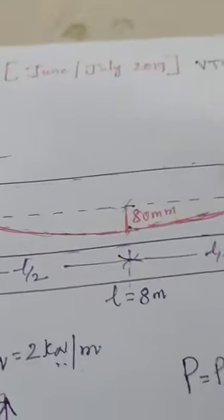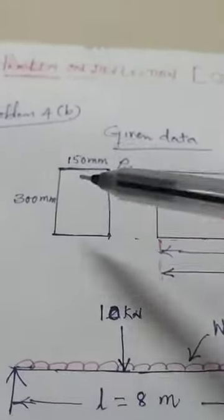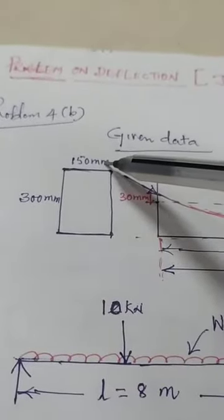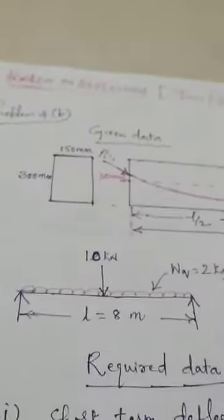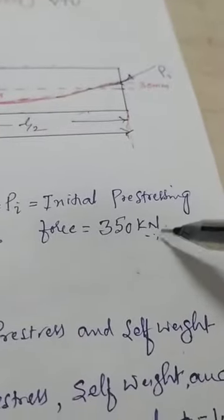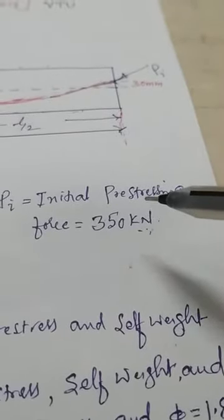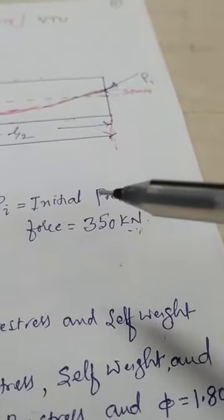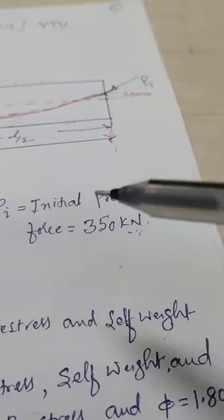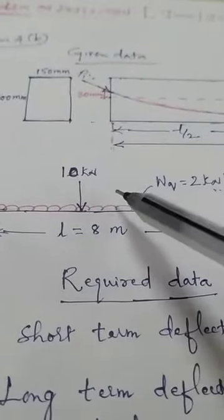Now come to the problems — these are VTU problems and three problems are solved. In the first problem, the given data is: b = 150 mm, overall depth = 300 mm, span = 8 m, eccentricity at center e1 = 80 mm, eccentricity at ends e2 = 30 mm, prestressing force P = 350 kN. The external loads given are a live load point load and an external UDL.